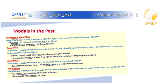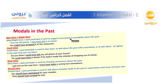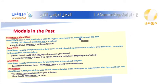We use may or might have plus past participle for suggesting uncertainty — meaning you are not sure, you don't know if it is correct or not, you are not certain — or possibility, meaning it is possible something happened in the past.